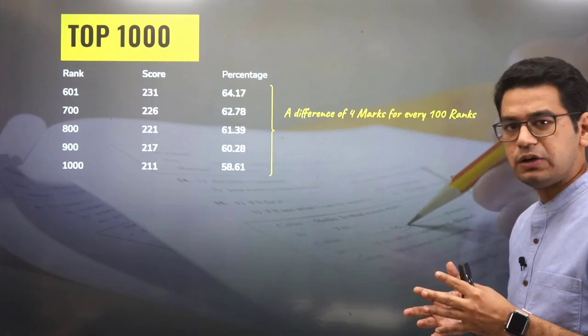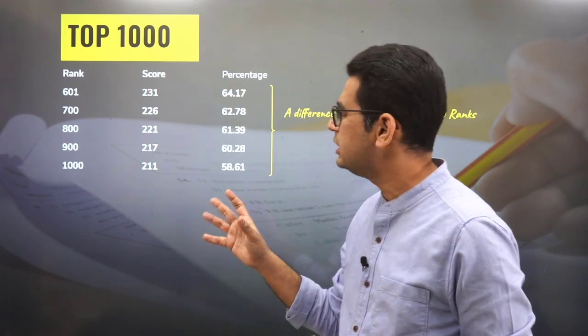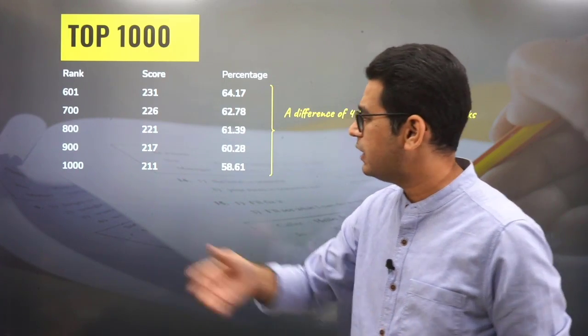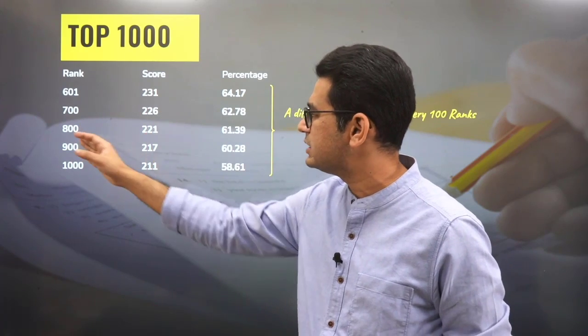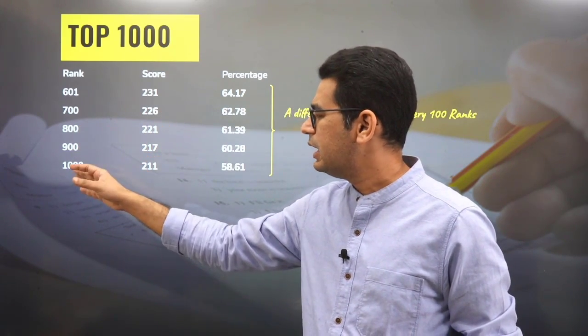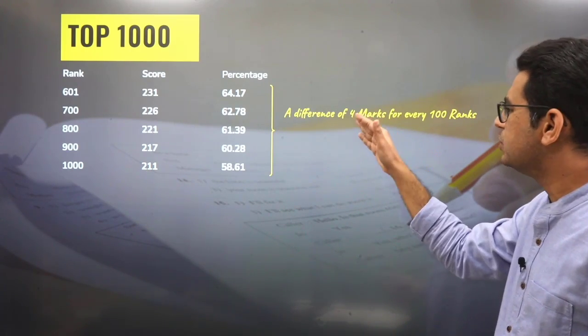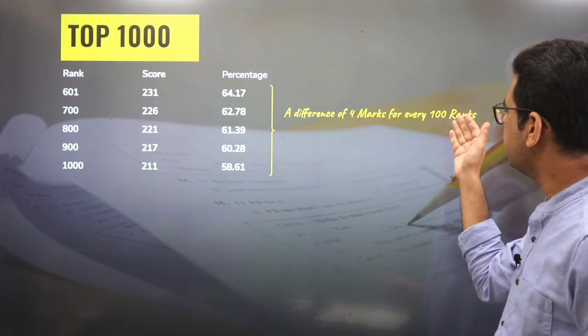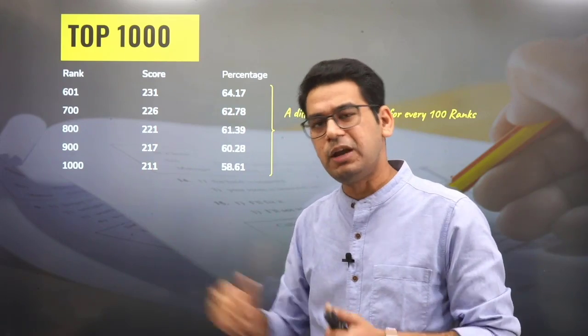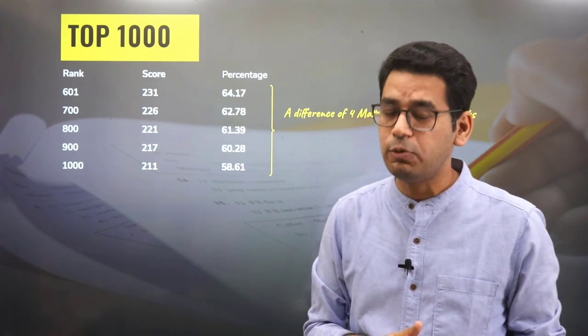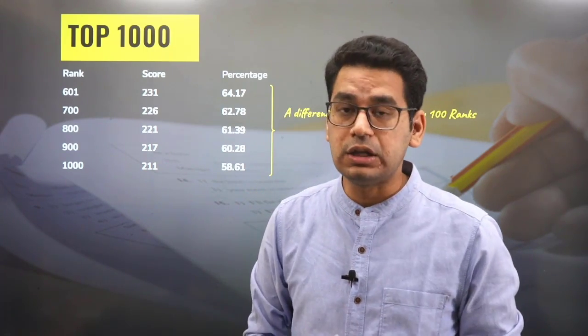Now if we see top 1000, for top 1000, you just require 58.61 percent which is again very standard if you see all the last 5 years statistics. So 600 rank was 211, 700 was 226, 800 at 221, 900 at 217, and 1000 at 211. A difference of almost 4 to 5 marks for every 100 ranks now. So for 1000, it could be 210 or 211, almost you can say 211-212 at 1000.